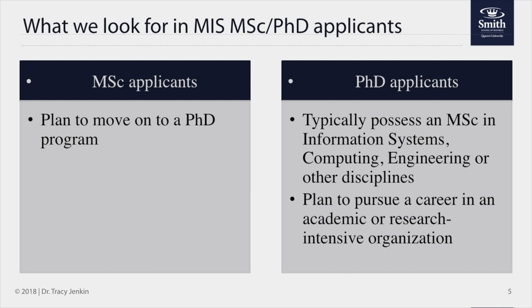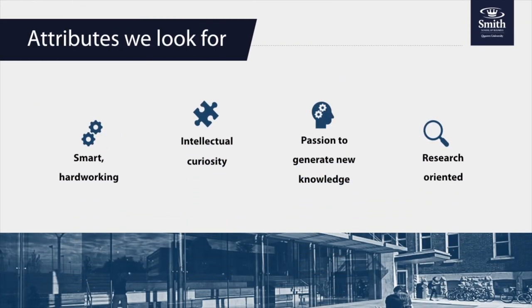In terms of our PhD applicants, some of the background that we're looking for: we do need you to have an MSc in either information science or computer science or other disciplines as one of the criteria. And then you're also planning to pursue an academic career after finishing your PhD—that is, you want to work at a university as a professor and conduct research. In terms of the attributes that we're looking for in our students, we want smart, hardworking students who also have intellectual curiosity, looking at trying to solve puzzles, identifying new puzzles, and trying to get new insights. And above all else, being research-oriented.